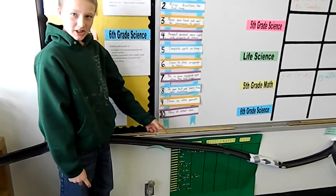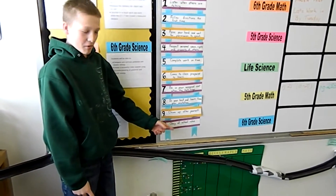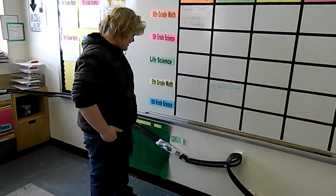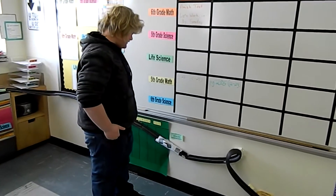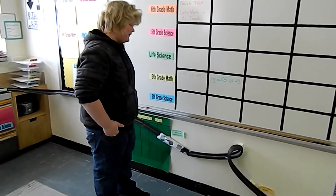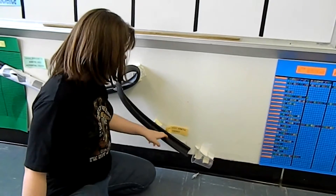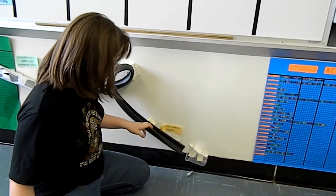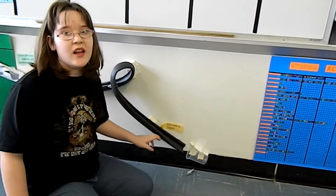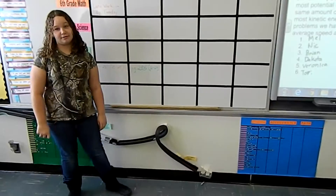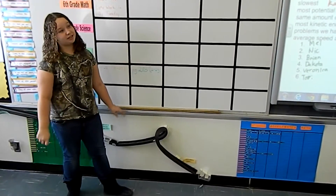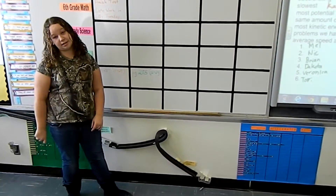In this section the marble has the most potential energy. This part right here has the same amount of kinetic and potential energy. This part is where the most kinetic energy was and the least potential energy. The average speed of this section is 1.6.